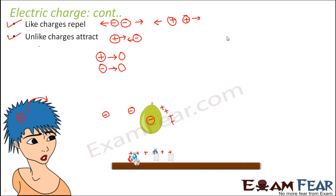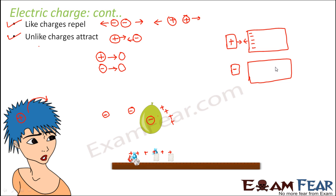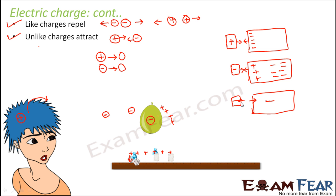Let us take another example. Suppose this object is positively charged and it is brought near a neutral object. The neutral object has both positive and negative charges inside. Since the nearby object is positively charged, all the negative charges will tend to come toward this side, and as a result they will attract. Similarly, if a negatively charged object is brought near a neutral object, all the negative charges in the neutral object will go away, leaving positive charges on this side — so they will attract. But if the negatively charged object is brought near another negatively charged object, there will be repulsion.